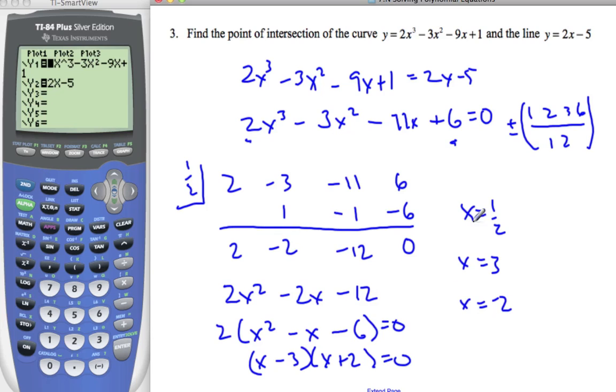If I want to find the corresponding y values, I can plug it into this equation or this equation. I prefer the linear one. So y = 2x - 5. 2 times 1/2 is 1, minus 5 gives me -4. The y value here: 3 times 2 is 6, minus 1 is 1. And -2, -4, so that is -9, is my coordinate point.